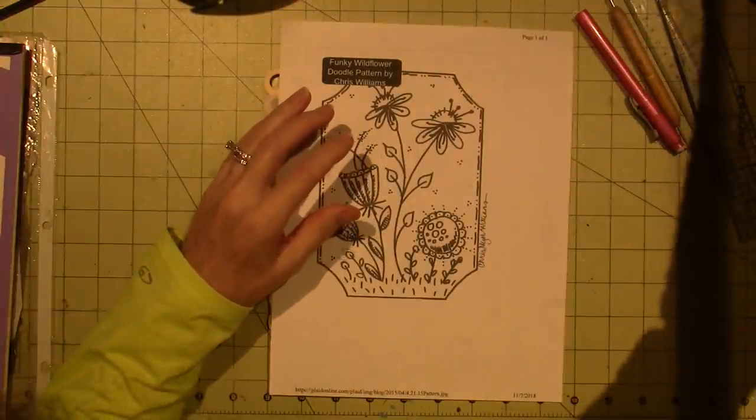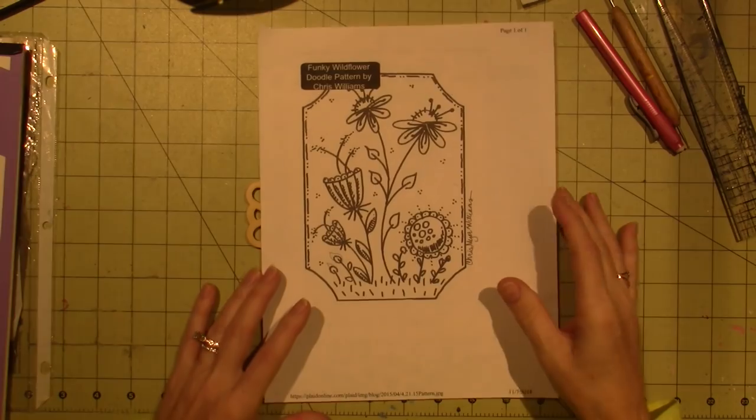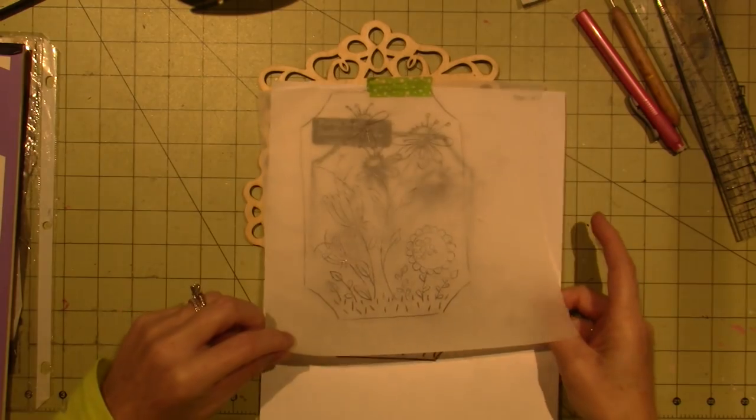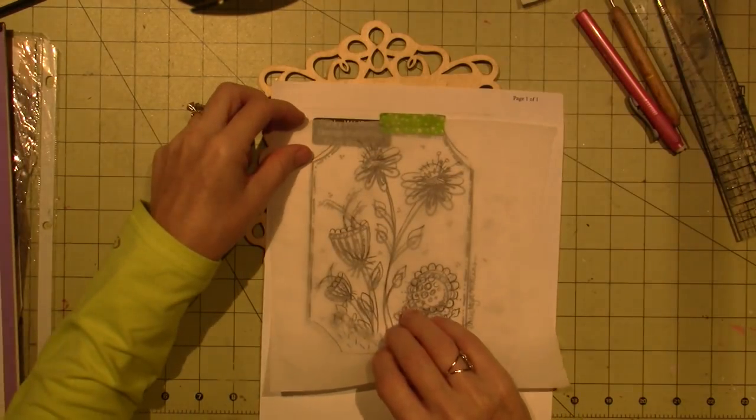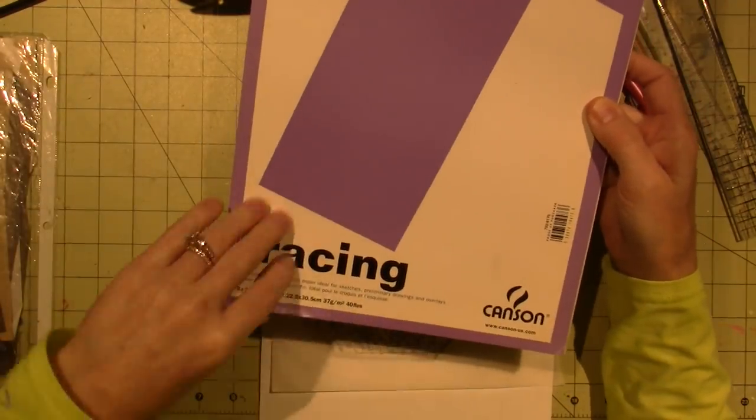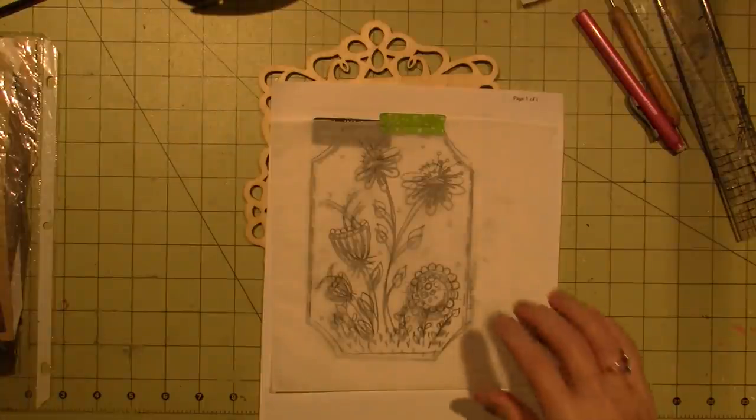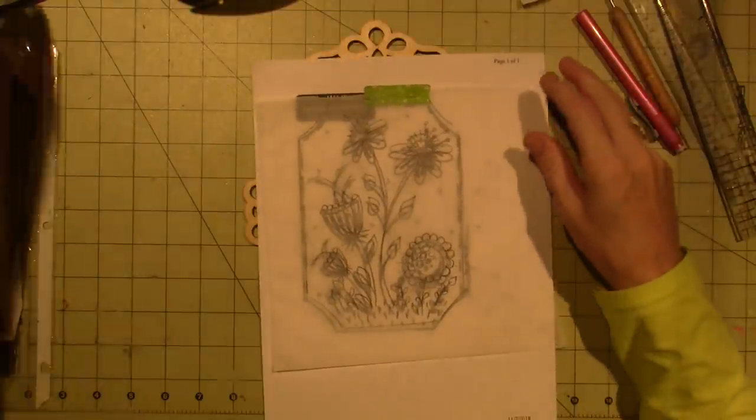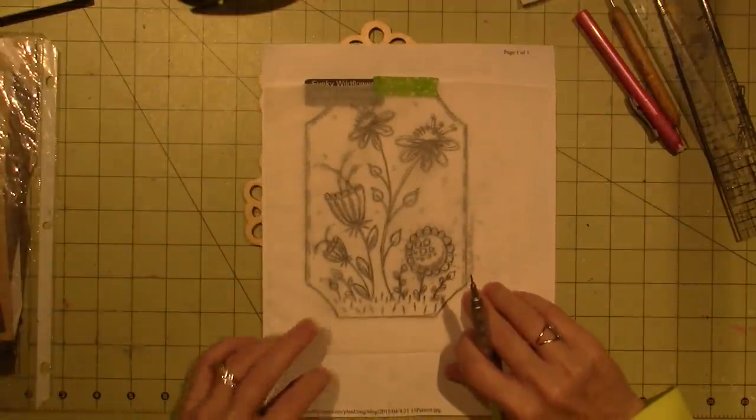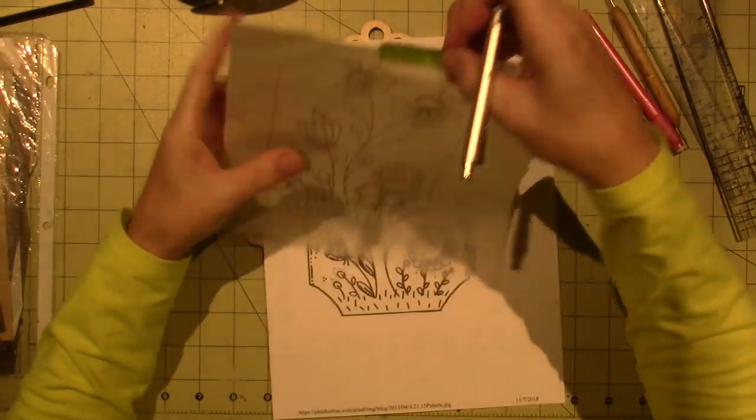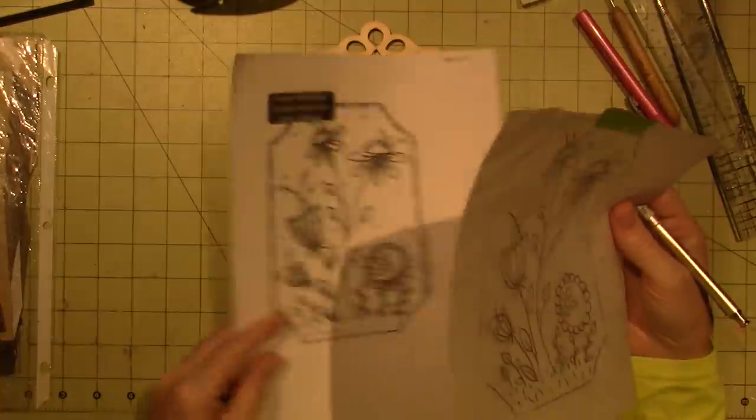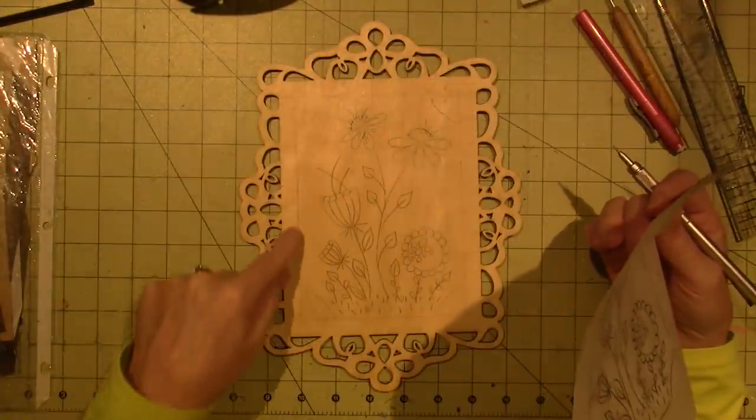So the first thing you want to do is to just trace the pattern. So I traced it out, put it under here with just tracing paper. This is Canson tracing paper. I like to use a pencil, you can use whatever you want. You just place it over and I traced most of the lines. I came in about an inch.